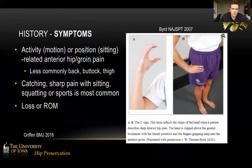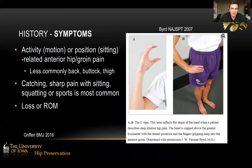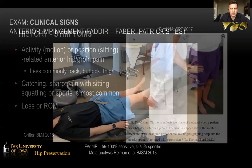Symptoms are typically activity- or motion-related anterior groin pain, less commonly back, buttock, or thigh pain. It can also be a sharp, catching, or stabbing pain in the front of the hip, or loss of hip range of motion. Most commonly we see this with cutting and pivoting sports, deep squats, or dance — it's a high-motion hip condition.